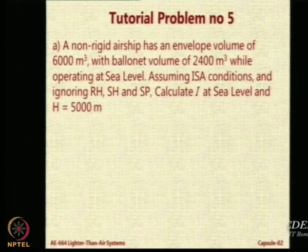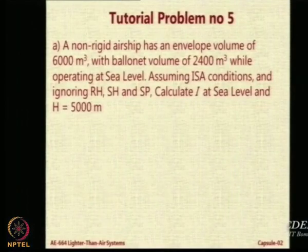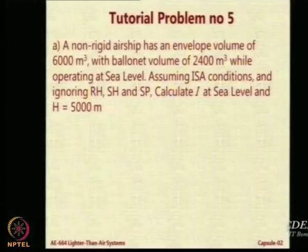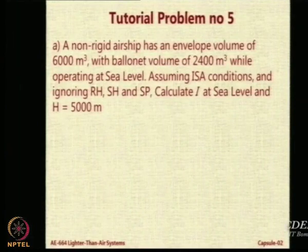Calculate I at sea level and I at h equal to 5000 meters. The first part — I at sea level — you should do it mentally. The total volume is 6000, minus the ballonet air of 2400 gives 3600, divided by 6000, which is the fraction of the gas. So I at sea level is 0.6.